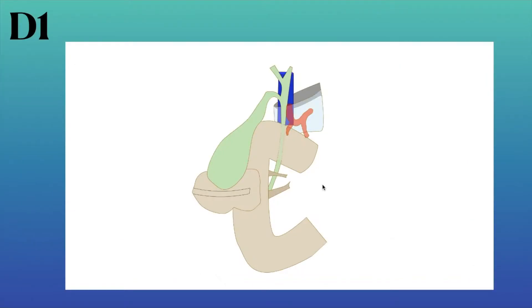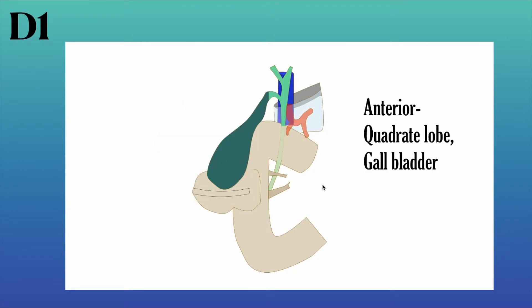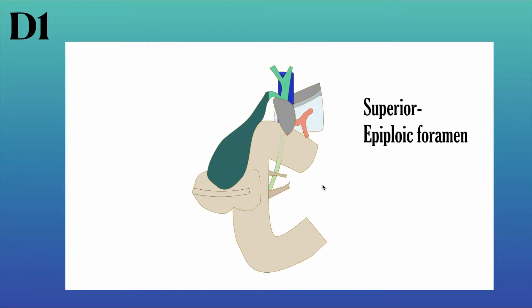The relations of the first part of the duodenum are as follows. Anteriorly: the quadrate lobe of the liver and the gall bladder. Superiorly: the epiploic foramen.